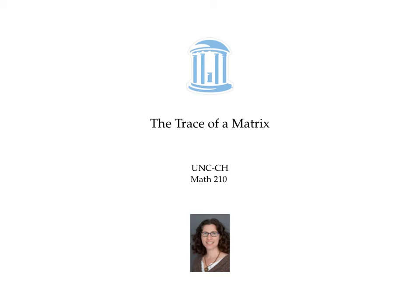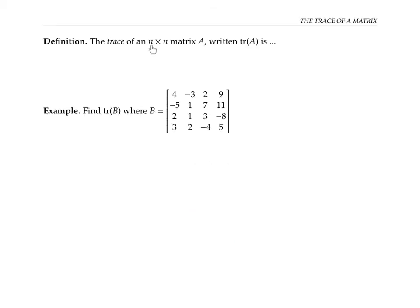This video is about the trace of a matrix. If you have an n by n square matrix A, the trace of the matrix, written tr of A, is the sum of the entries on the diagonal — the diagonal that starts at the upper left and goes down to the bottom right.